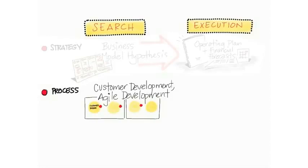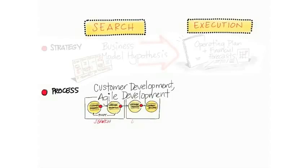And by the way, don't only think that agile engineering or agile development is about software. Toyota and the Toyota production system actually had it for hardware decades before anybody in software ever thought about it. So you could be building products — anything from microprocessors to medical equipment, to hardware, software, etc. — using an iterative and incremental engineering process.